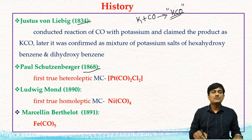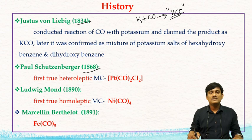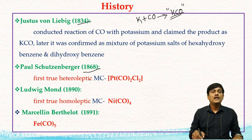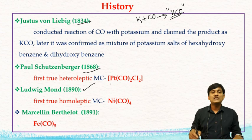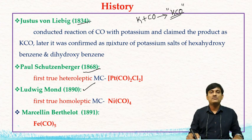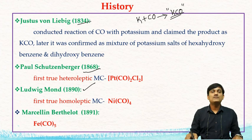In 1868, Paul Schützenberger synthesized dicarbonyl-dichloroplatinum(II) complex. This is the first metal carbonyl and the first true heteroleptic metal carbonyl. In 1890, Ludwig Mond prepared the first true homoleptic metal carbonyl, that is nickel tetracarbonyl, Ni(CO)₄. In 1891, Marcelin Berthelot prepared Fe(CO)₅. Later on, many more metal carbonyls were synthesized, and at present we have a numerous number of metal carbonyls.